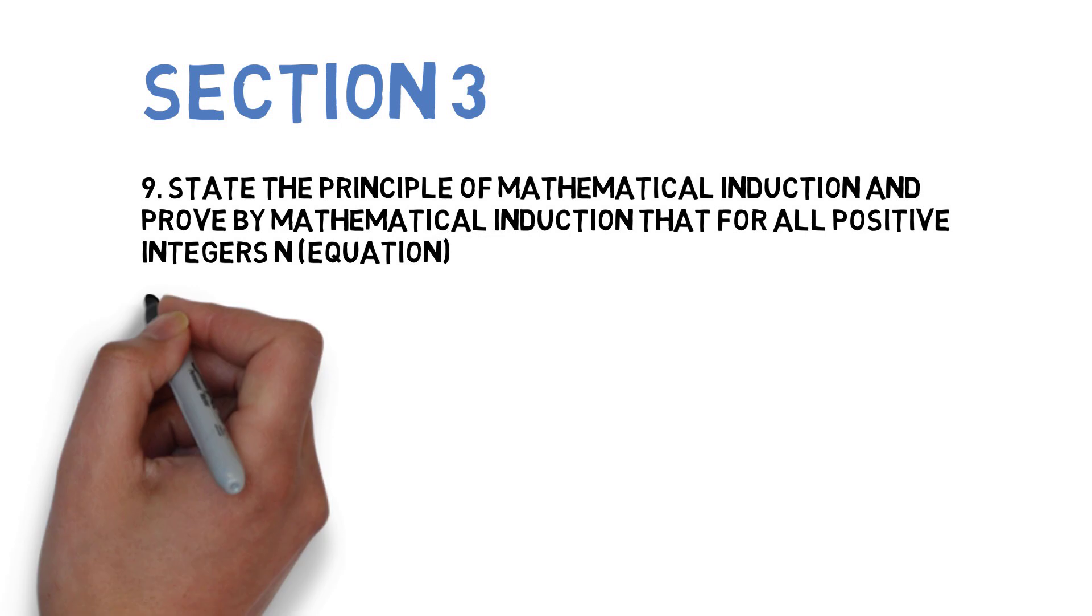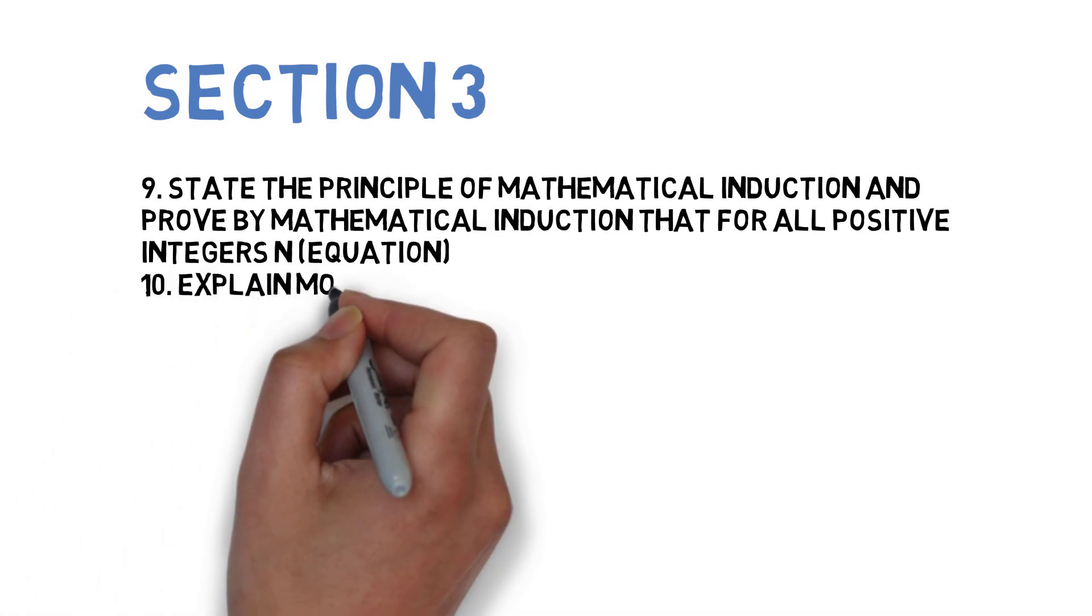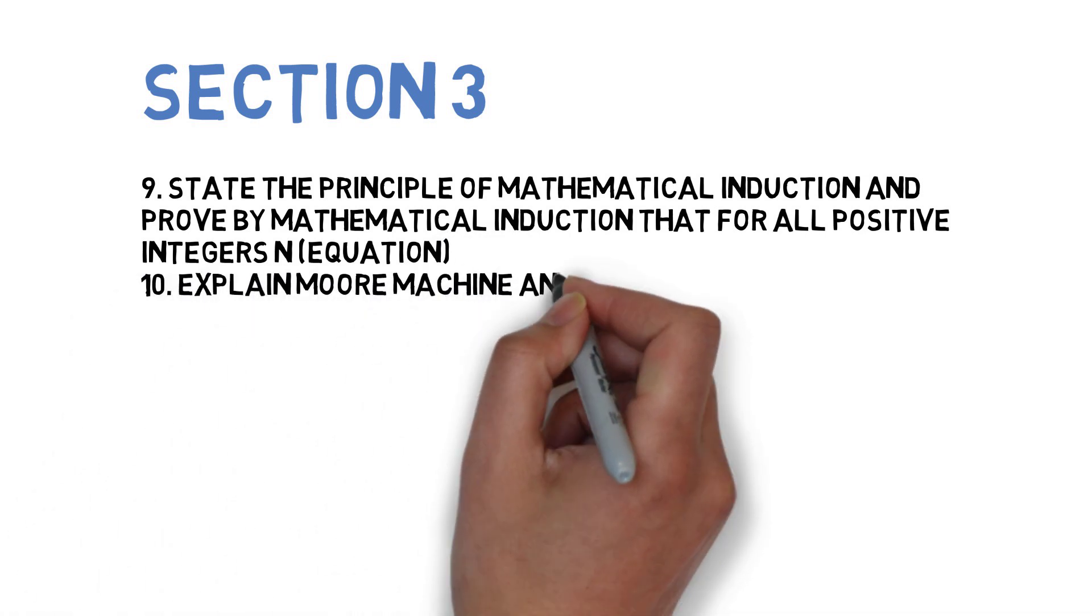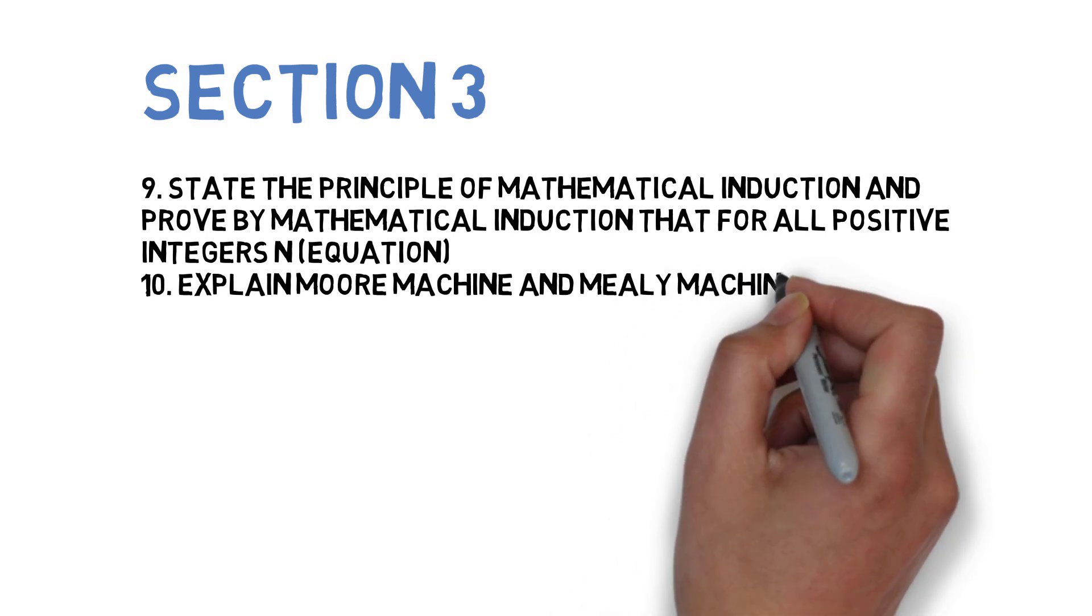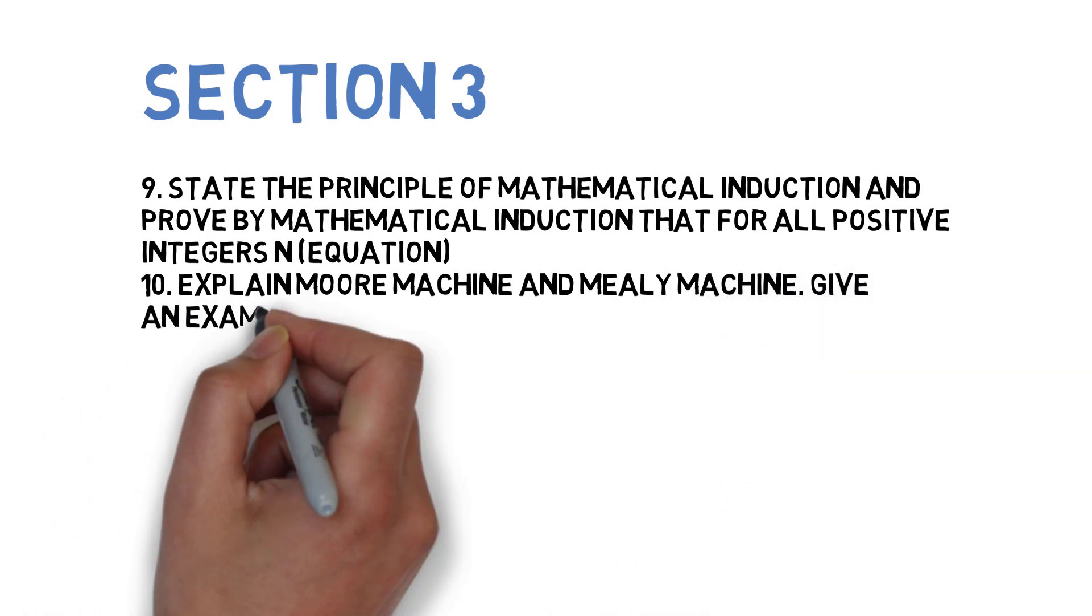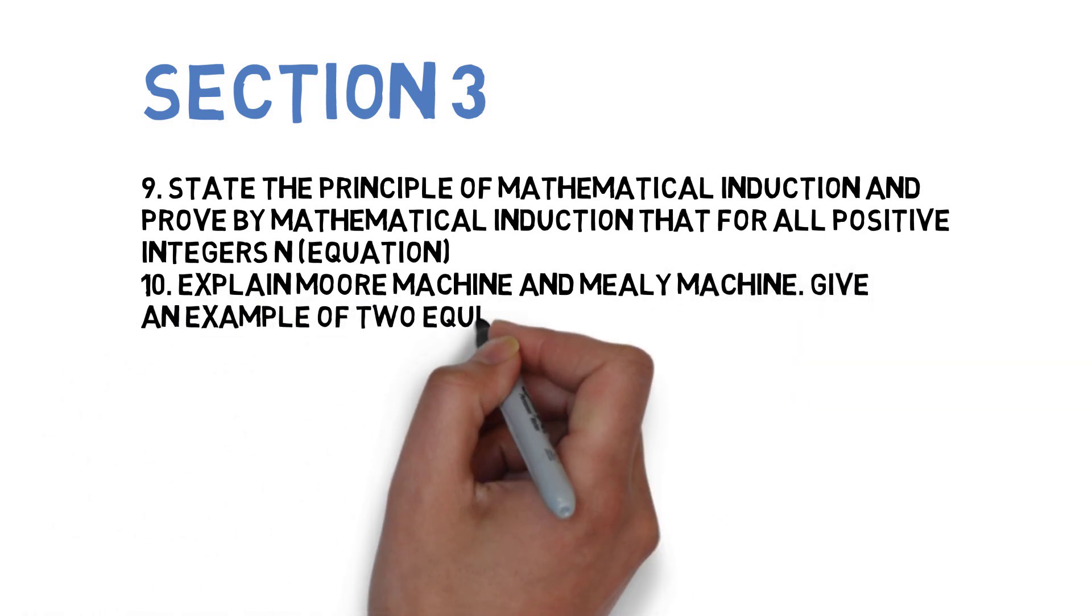This is a numerical where your numbers or values can change. Question number 10 is explain Moore machine and Mealy machine. Give an example of two equivalent machines of each type performing similar functions.